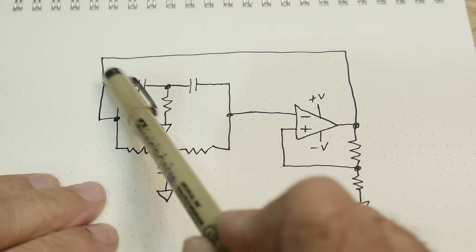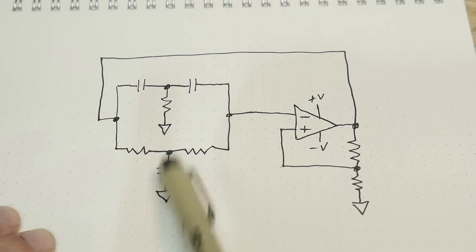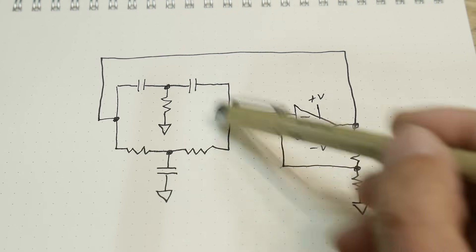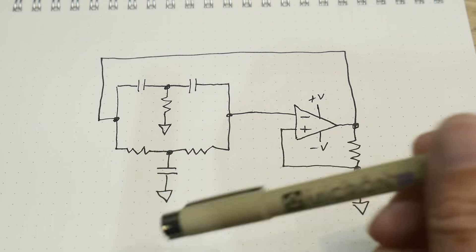So here's a T. Looks like a T. Here's a T. So there's two of them, so it's a twin T.